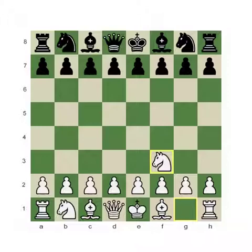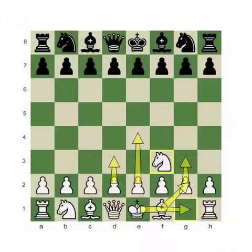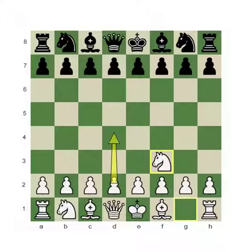White can go either with the King's Indian Attack, which happens after g3, bishop g2, then pawn to d3 and castles, intending furthermore to play pawn to e4. Or white can play pawn to d4 with a plan to bring the light-square bishop to f4 or maybe g5, having good prospects in the center.